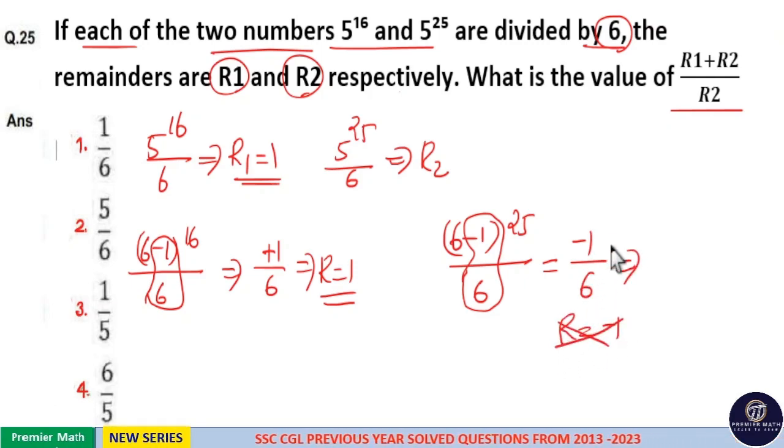So 6 minus 1. 5 is your remainder. So R2 is equal to 5 here.